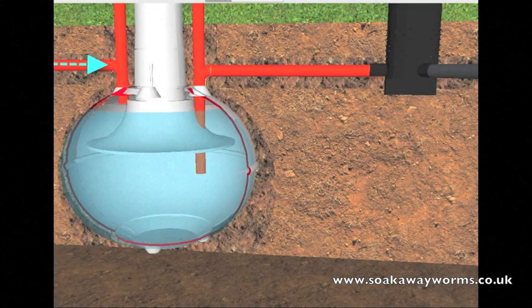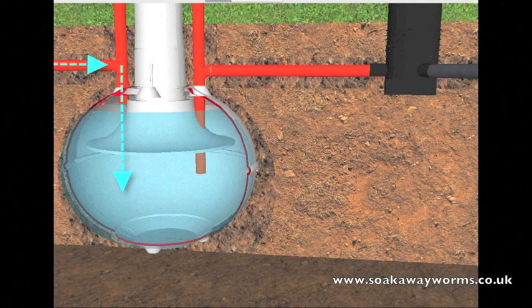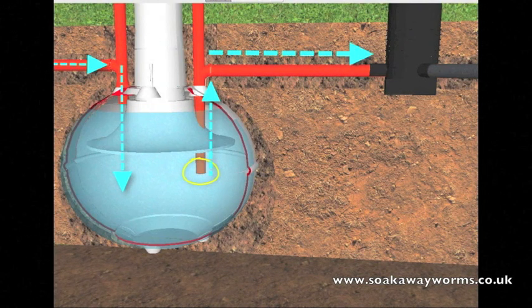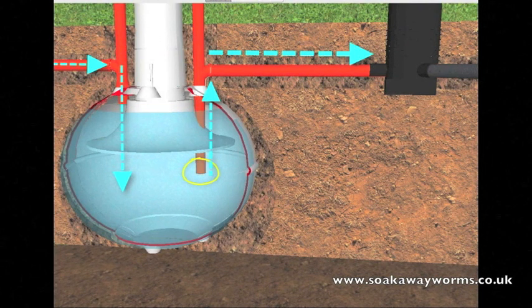All the waste that enters the tank fills it up. Once the liquid reaches a certain level it makes its way up through the outlet pipe along the pipe towards the soakaway.